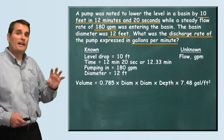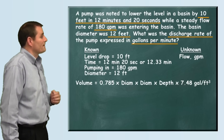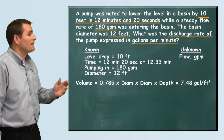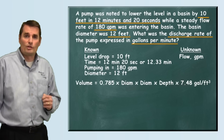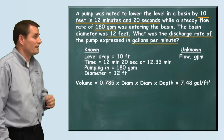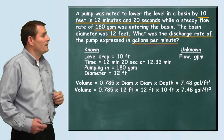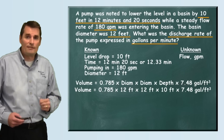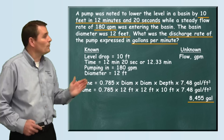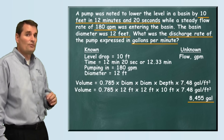We first need to find the volume of the level drop. We use the volume formula: 0.785 times the diameter times the diameter times the depth times 7.48 gallons per cubic foot. This gives us the total volume drop during this 12.33-minute period. Plugging in our diameter of 12 feet and our depth drop of 10 feet, we find that the total volume was 8,455 gallons.